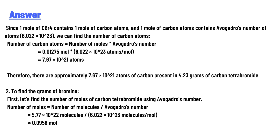That gives approximately 7.67×10²¹ atoms. Therefore, there are approximately 7.67×10²¹ atoms of carbon present in 4.23 grams of carbon tetrabromide.